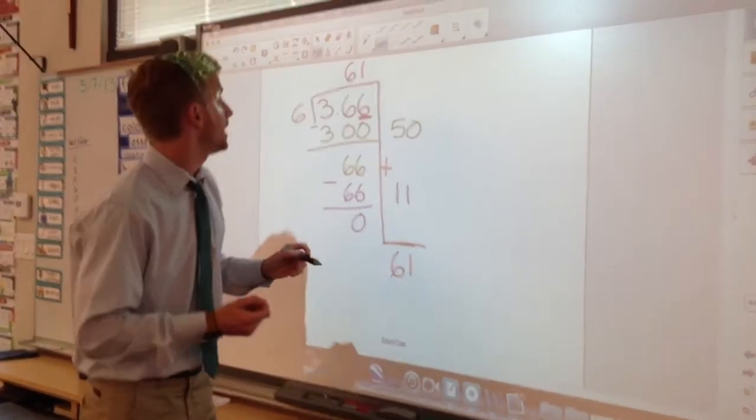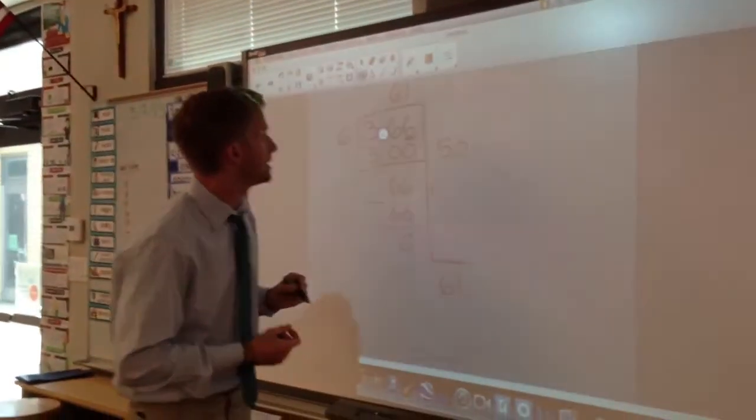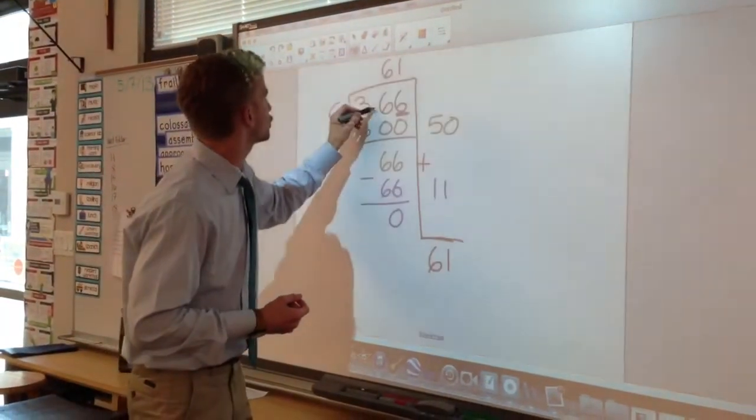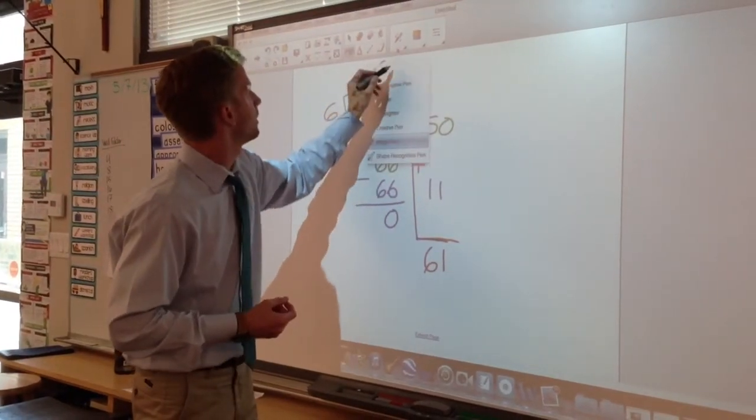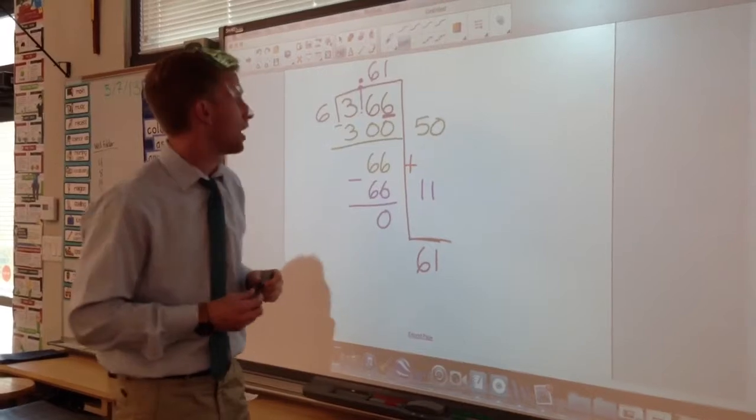Now the quick tip is to simply take this decimal in my dividend and move it straight up in my quotient. And our answer is 0.61.